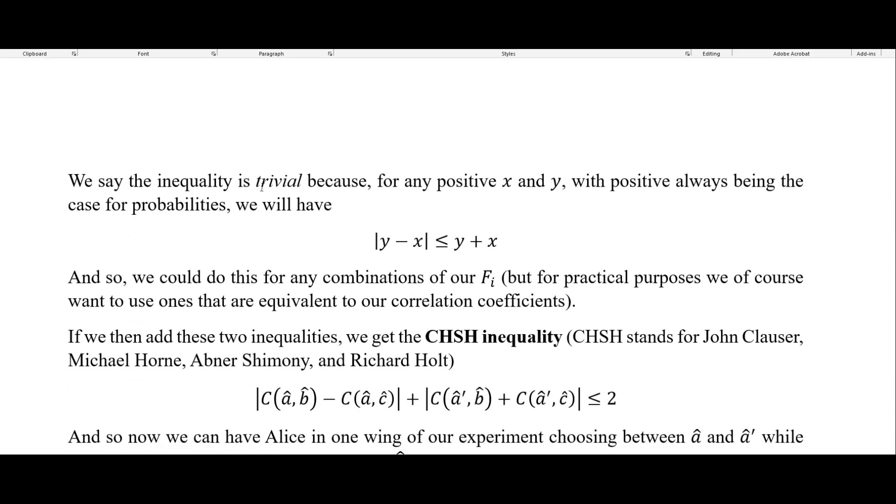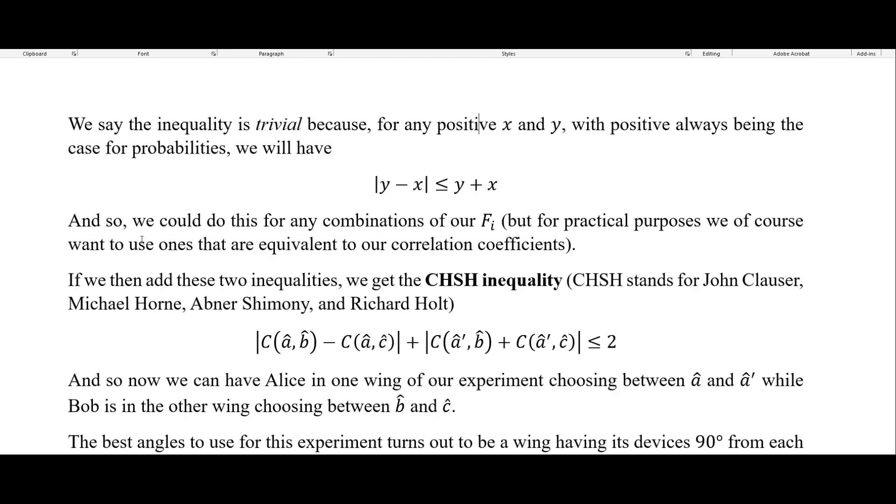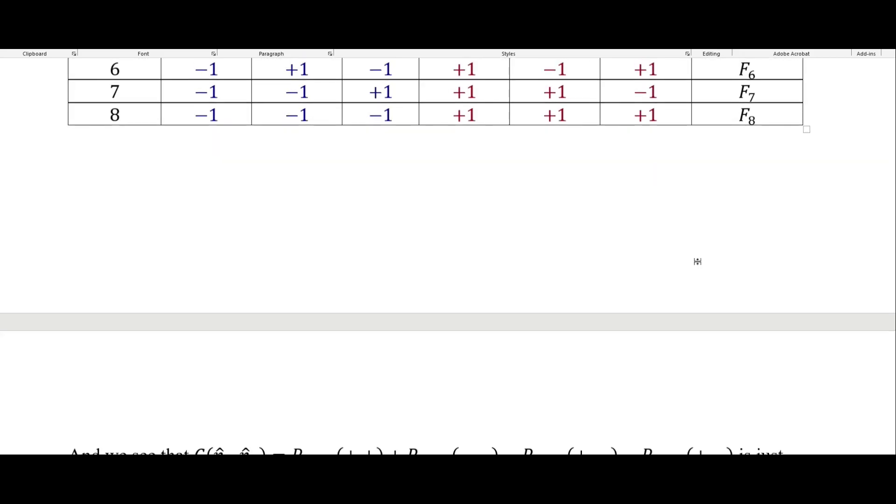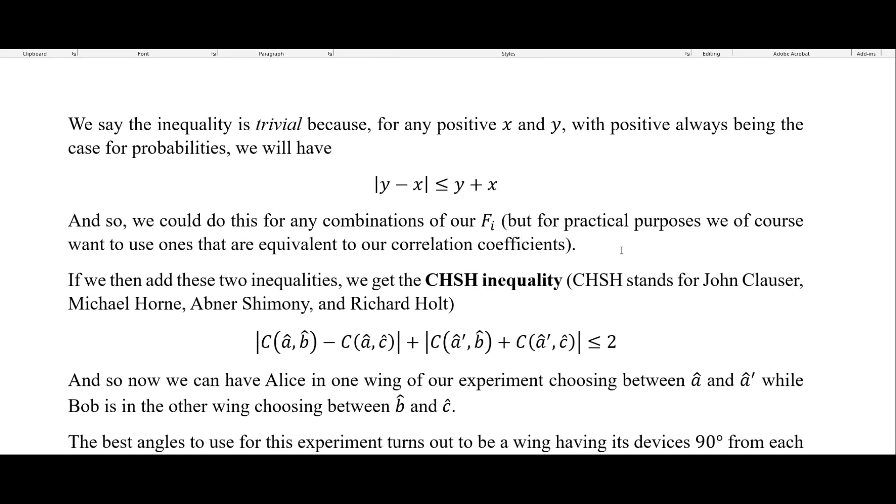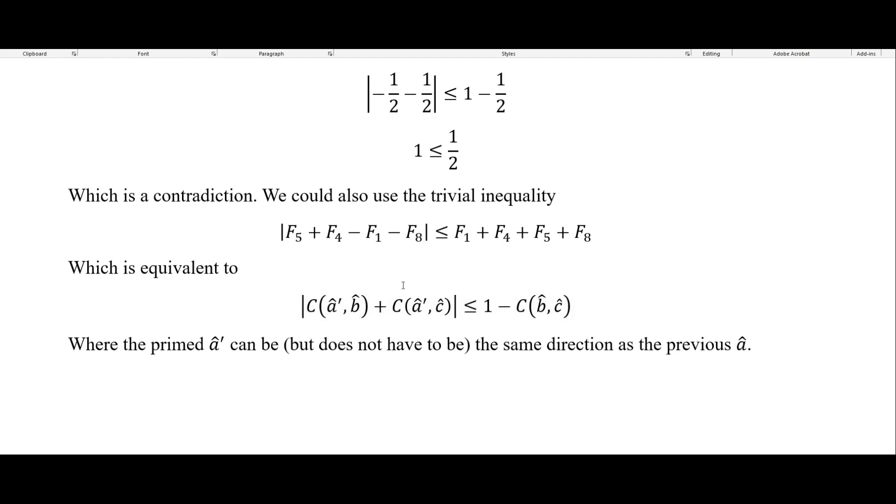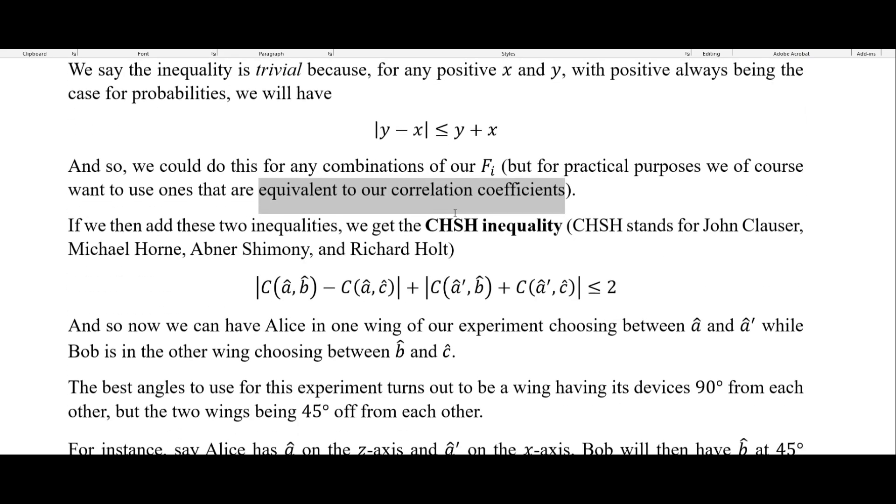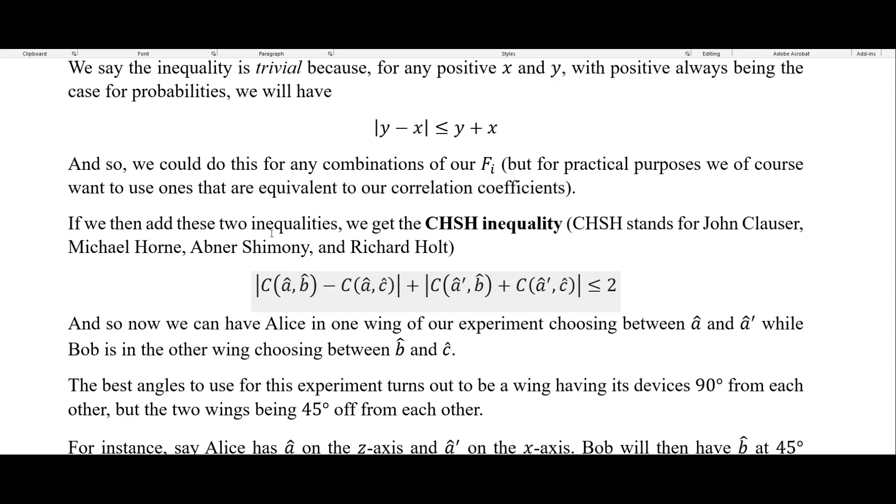We say the inequality is trivial. And I'm putting this here because I always kind of hate in these math books when they say that something is trivial. So just to kind of explain why we call it trivial. For any positive X and Y, which is positive being the case for probabilities, we will have this. So the absolute value of Y minus X is less than or equal to Y plus X. And so we could do this for any combinations of our F up here, of our different frequencies up here. But of course we are, for practical purposes, going to be interested in the ones that are equivalent to our correlation coefficients, such as what we got in this inequality right here and this inequality right there.